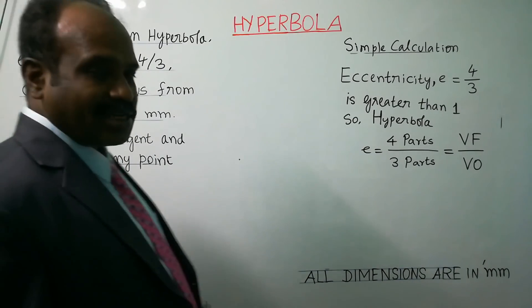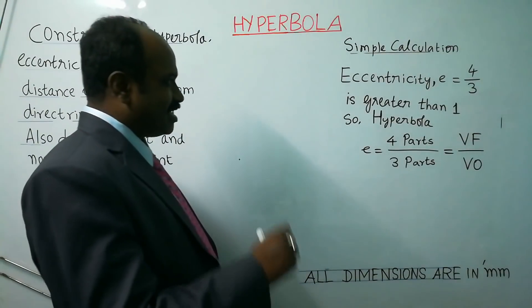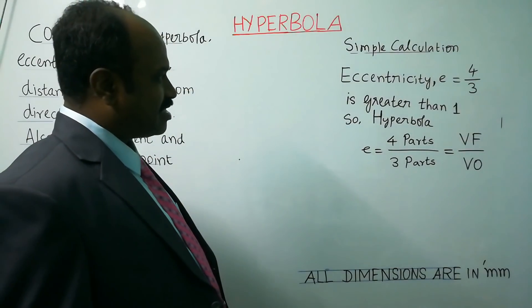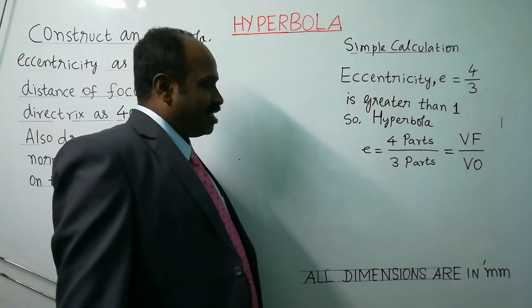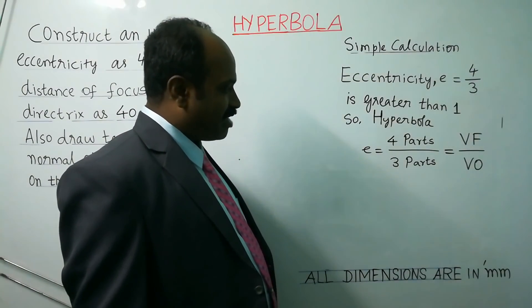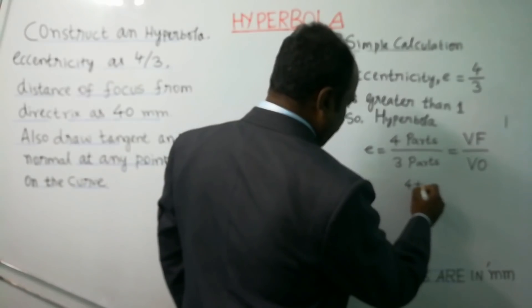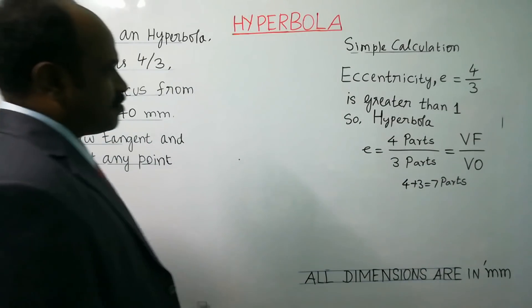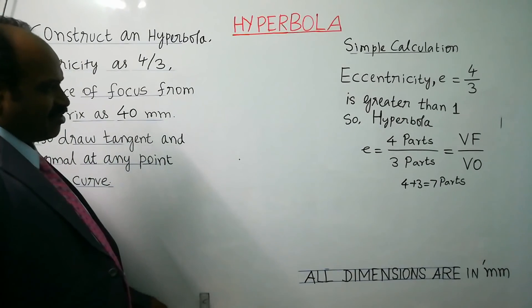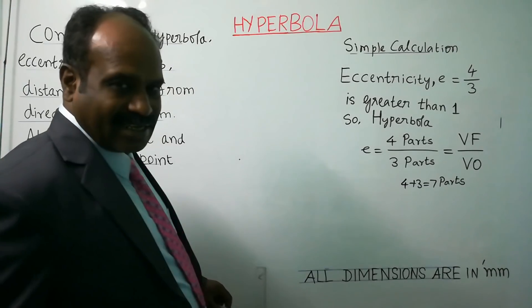A simple calculation is worked out on the right side of the drawing sheet. Eccentricity, indicated by the letter e, is equal to 4 by 3, which is a value greater than 1, so a hyperbola will be the curve obtained. Based on the eccentricity value, e equals 4 parts by 3 parts, that will be the ratio VF by VO. The total number of parts will be 4 plus 3, which equals 7 parts.